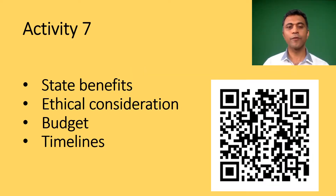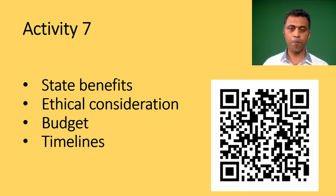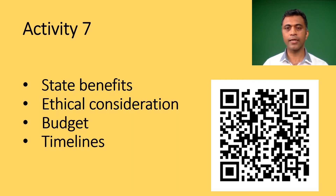Let us do the final activity. We'll help you develop a research proposal. State the benefits of the study, ethical considerations including informed consent, and subject protection. Then include the budget and timelines. Complete the activity in the same Word file as the other activities and send it for evaluation. If you do not have the Word file, scan the QR code and access it as before, then follow the instructions. Pause the video for scanning the QR code.